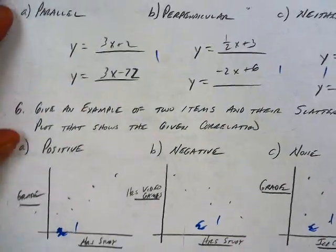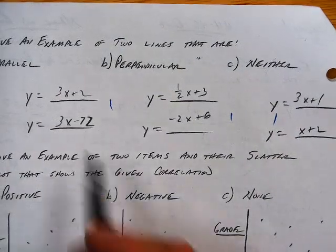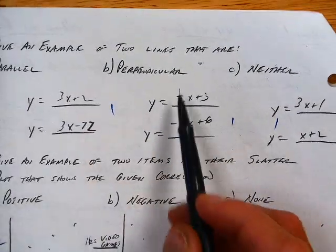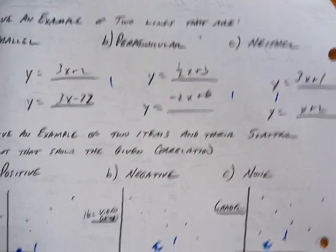Looking at the next 5: same slope, opposite reciprocals, no special relationship.